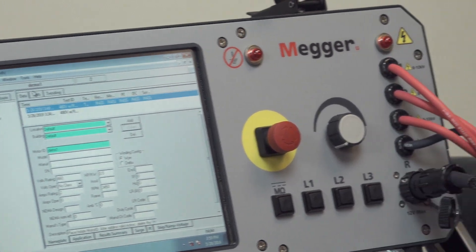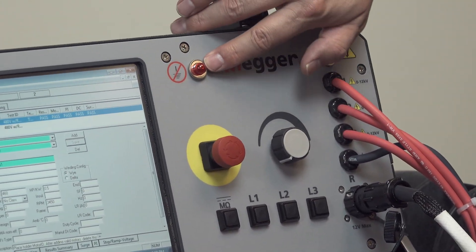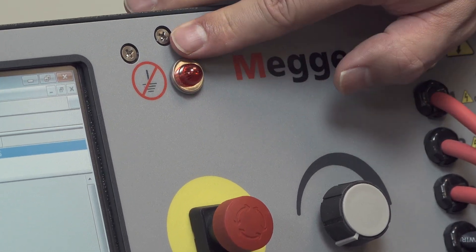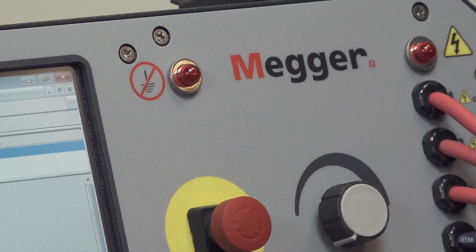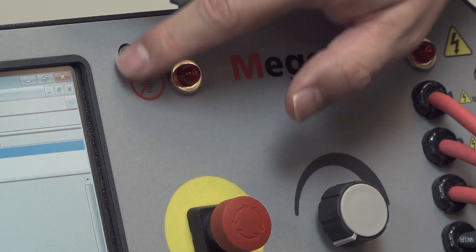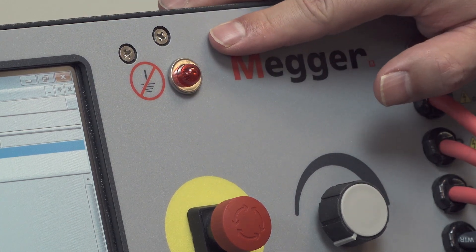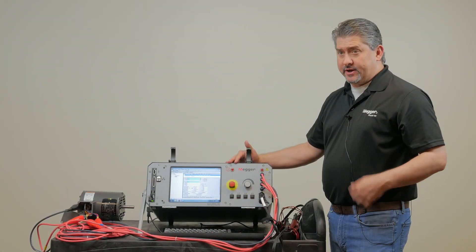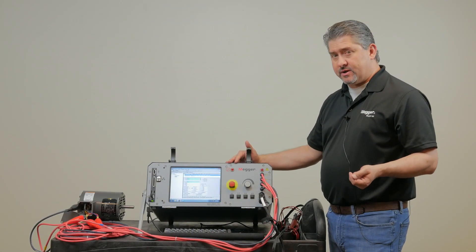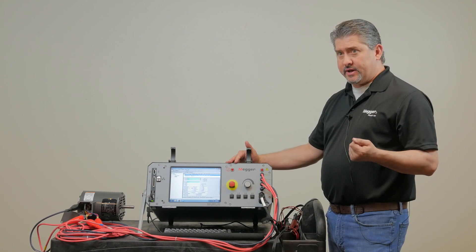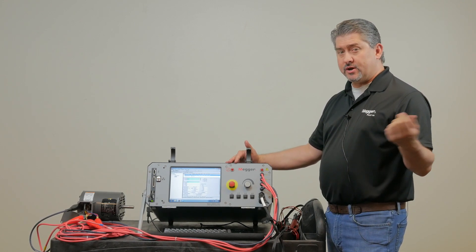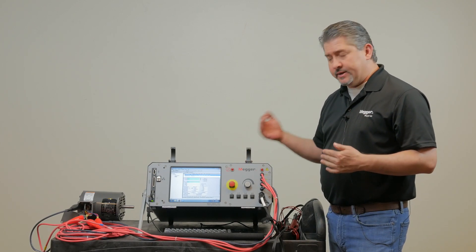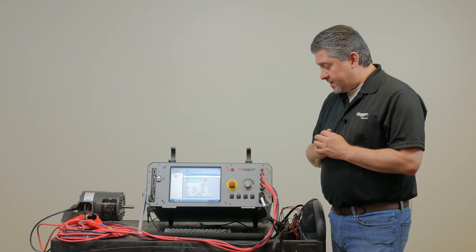Then on the right side we have the open ground indicating light. This would illuminate if your power supply was not properly grounded. This is also associated with a safety interlock that wouldn't allow the high voltage power supply to be energized if you didn't have a proper ground. Now, this can be overridden if you're in a situation where you're connected to an ungrounded distribution system, but proper safety precautions need to be taken prior to overriding that interlock.